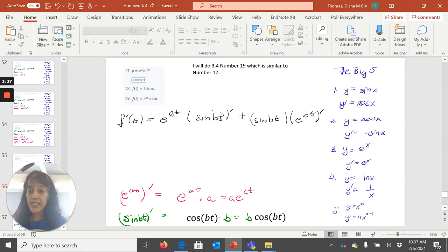In my number 19, I have a product. I have e to the a t, which is the first mess, times sine b t, which is the second mess. And then I'm going to multiply first times the derivative of the second plus second times the derivative of the first.